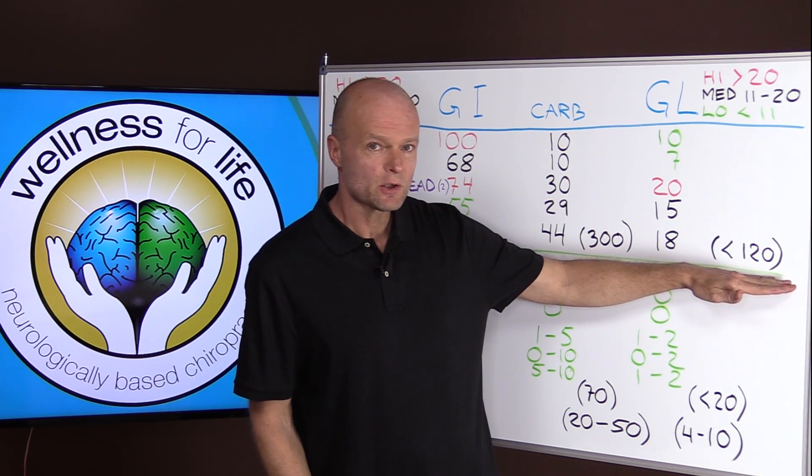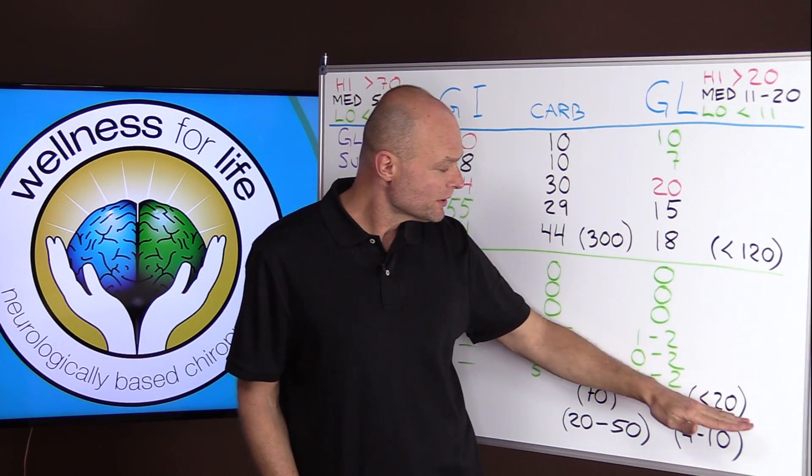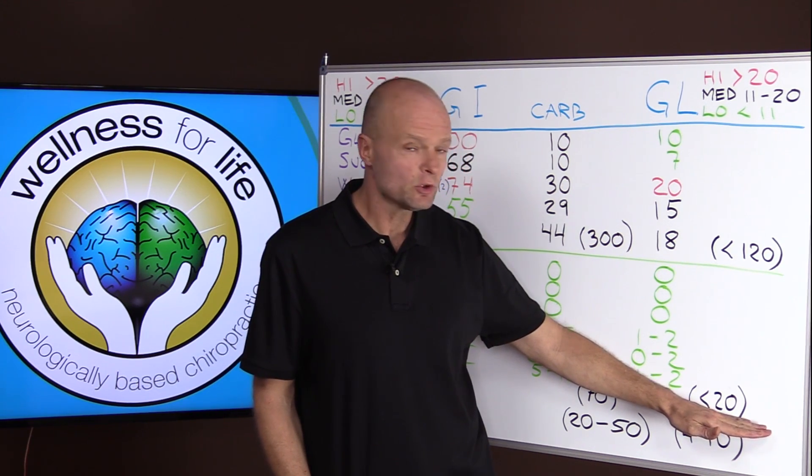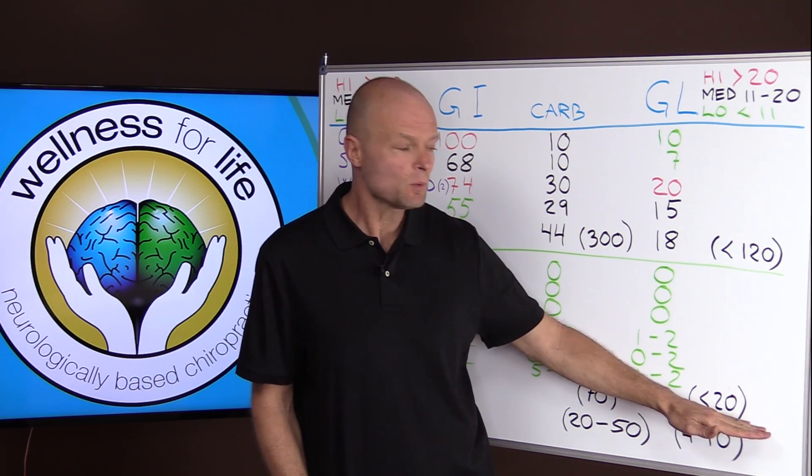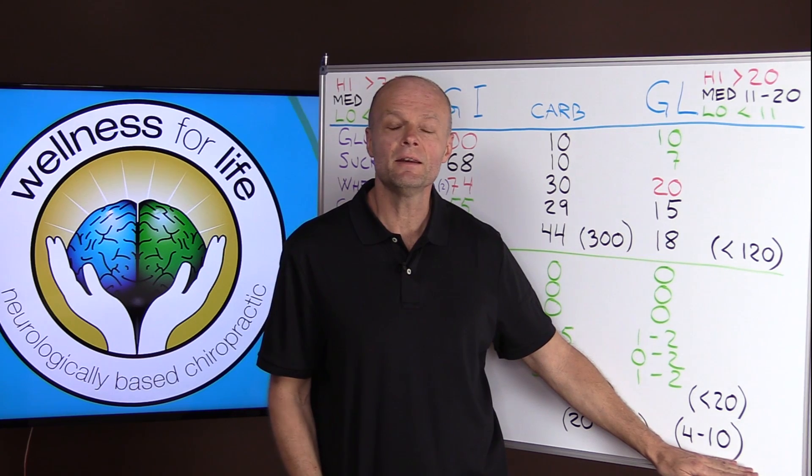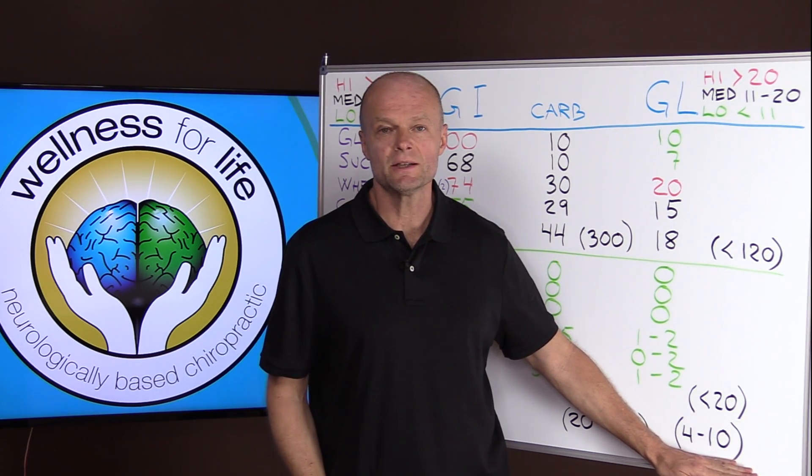So when we look at the glycemic load, 120 again is a crazy high number. We want to try to stick below 20 if we're healthy and want to stay that way, and probably between 4 to 10 if we're trying to reverse some condition.